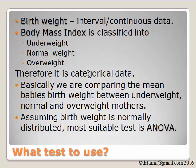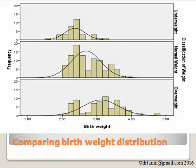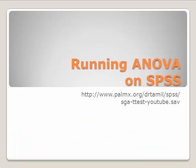ANOVA is short for analysis of variance. If we look at the distribution of the data by group — underweight, normal weight, and overweight — we can clearly see that underweight mothers have lower birth weight babies compared to normal weight mothers, and normal weight mothers have clearly lower birth weight babies than overweight mothers. So let's run the analysis on SPSS.